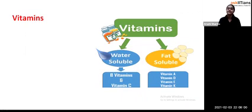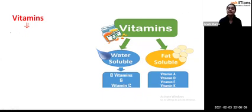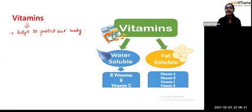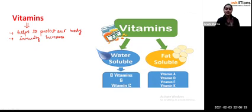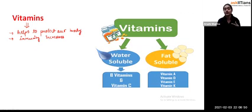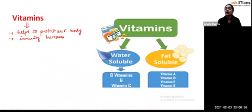Now let's look at another food component: vitamins. Vitamins help protect our body from disease and increase the strength of our immunity system. That is why when a person gets ill, doctors prescribe vitamins — so the body gets protected and immunity increases. Vitamins also help control the hormonal situation in our body, maintaining balance.